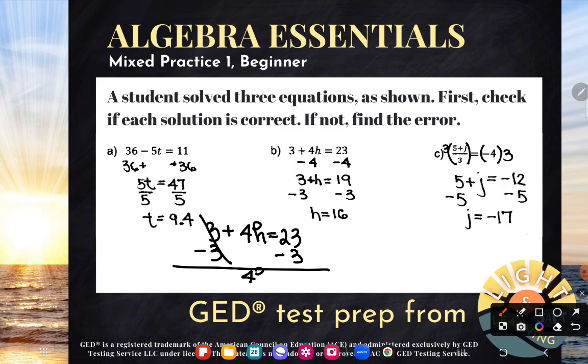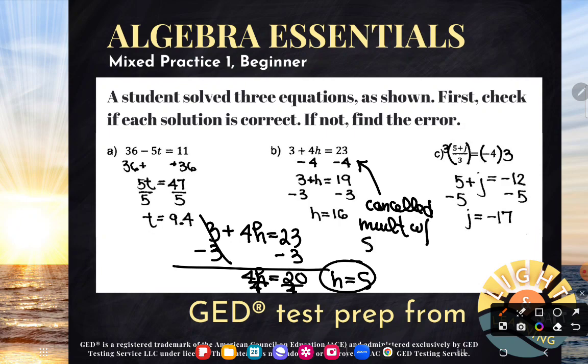First step that this student should have done is to take 3 away from both sides. And then it would have been easy to see that that 4 is a multiplier and would eventually get divided away. And I would get H is equal to 5. So what was the error here? They thought that they tried to cancel multiplication with subtraction. That didn't work.